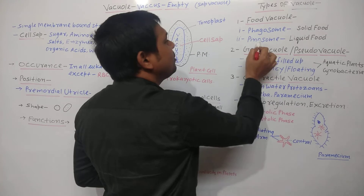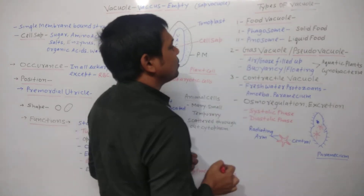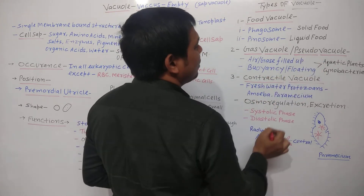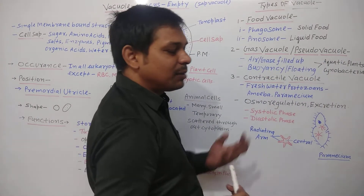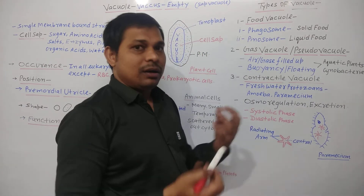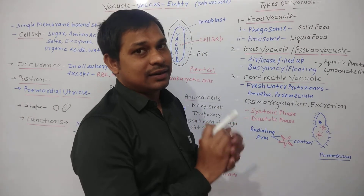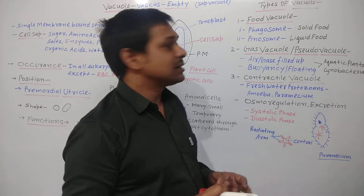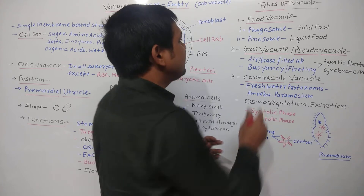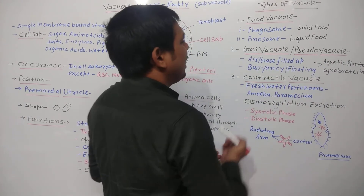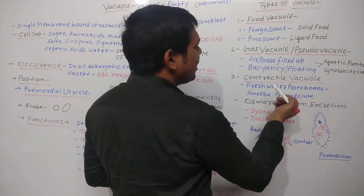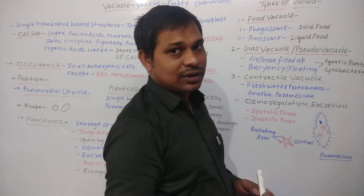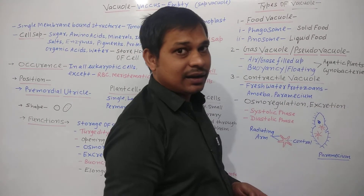So phagosome contains solid form of undigested food, and pinosome contains liquid form of food — these together are the food vacuoles. Next are gas vacuoles or pseudo vacuoles. Sometimes vacuoles contain gases like oxygen, nitrogen, carbon dioxide, or other gases. Such vacuoles are known as gas vacuoles or pseudo vacuoles, and they are generally present in aquatic plants, aquatic animals, and also in cyanobacteria.